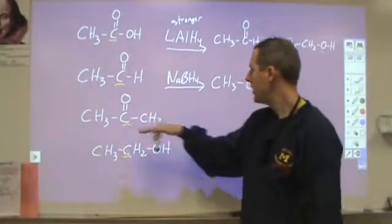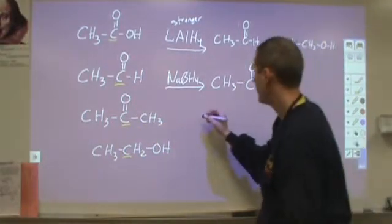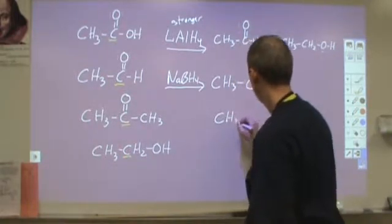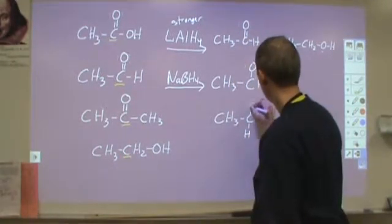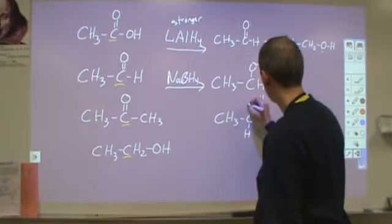In the case of a ketone, we have capacity to take away one of those bonds and put a hydrogen in its place, so we're going to form a secondary alcohol.